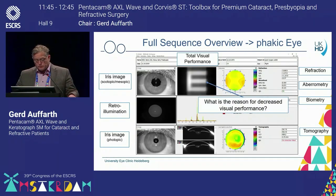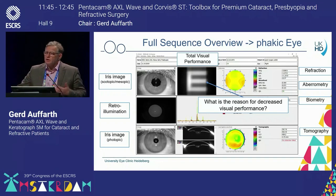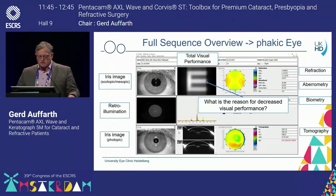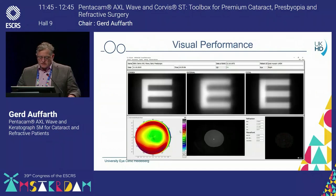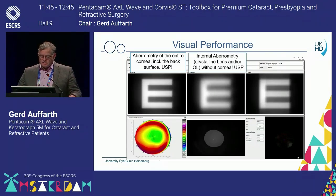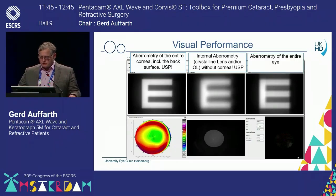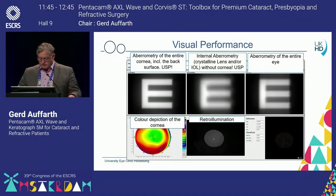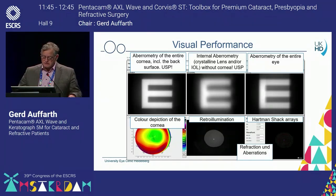One would like to ask what's going on, why we have such a funny total wavefront here. If you look at it, you differentiate between the corneal wavefront — aberrometry of the entire cornea, including the back — and the internal, which would be the lens or the capsular bag with an intraocular lens placed in it, and then the sum of it, the aberrometry of the entire eye. You can look at the cornea, the retroillumination, and here the Hartmann-Shack arrays are listed — refraction aberrations. All this can be seen in one picture.